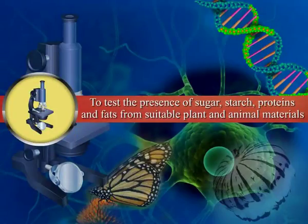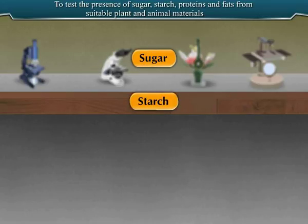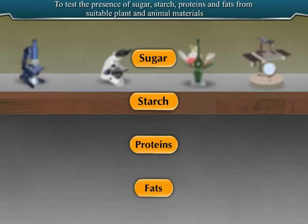To test the presence of sugar, starch, proteins and fats from suitable plant and animal materials. We shall perform tests to find out the presence of these 4 nutrients, namely sugar, starch, proteins and fats, by performing different types of tests.